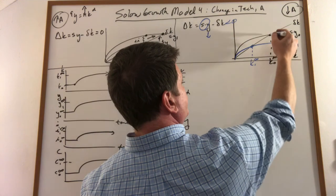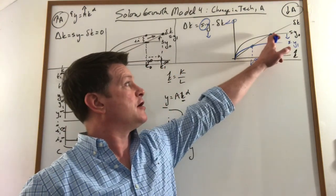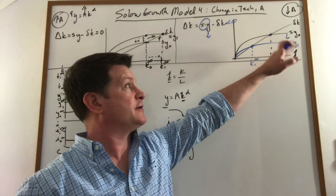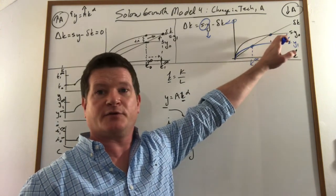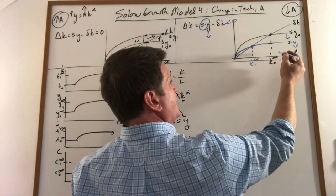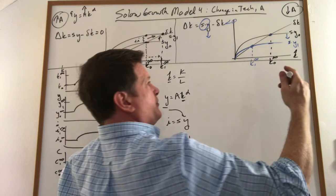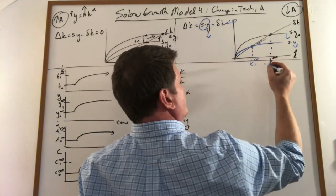What happens? Originally, because technology was good, our investment was just being offset and was just enough to offset depreciation. Now, it's not enough, so our capital begins to depreciate and fall apart, and we move towards here.